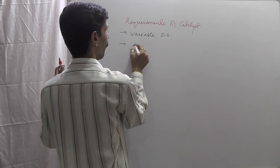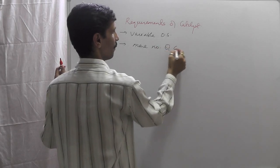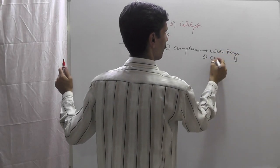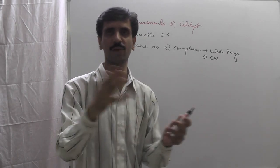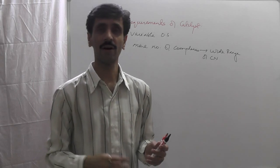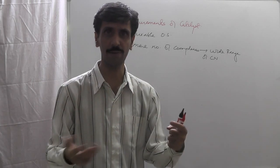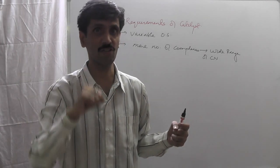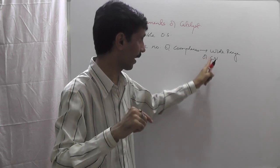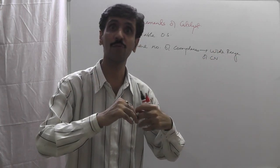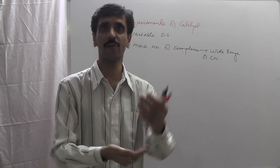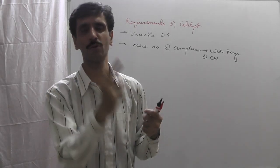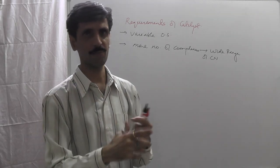Point number two is it should form more number of complexes with a wide range of coordination numbers. Complexes involve metal as well as ligands — a metal and ligands combination gives a coordination compound. The number of donor atoms of the ligands surrounding the metal is the coordination number. It should have the ability to form complexes with a wide range of coordination numbers, meaning it has to be versatile — it should be able to form coordinate covalent bonds with different numbers of donor atoms.